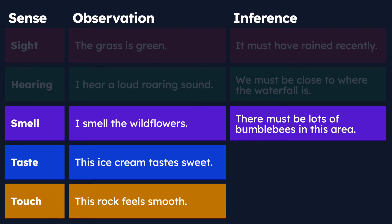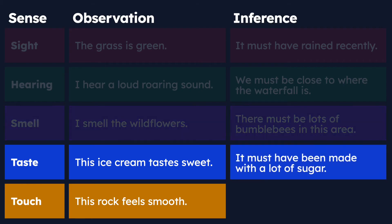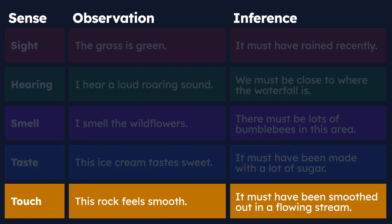With smell, we said we smell the wildflowers, and we might infer that there are a lot of bees in the area, because we know bees like wildflowers. The ice cream tastes sweet, so we infer it might have been made with a lot of sugar — we don't know for a fact, but it's a safe bet. Finally, with touch, the rock feels smooth, so we can infer it was smoothed out in a flowing stream, based on our observations and past knowledge.